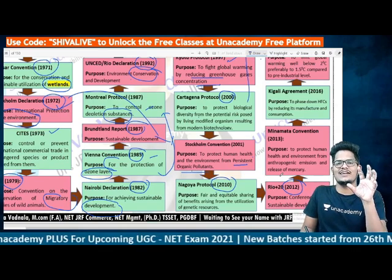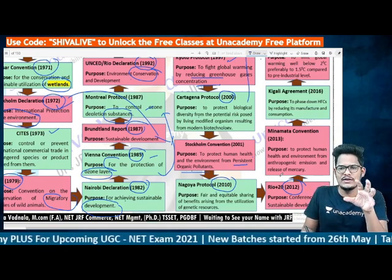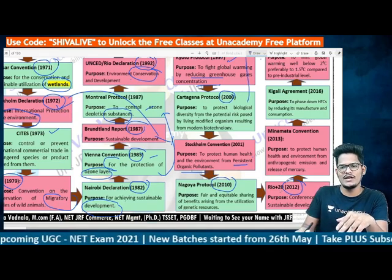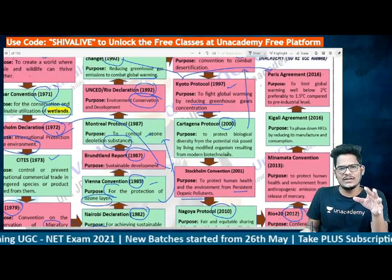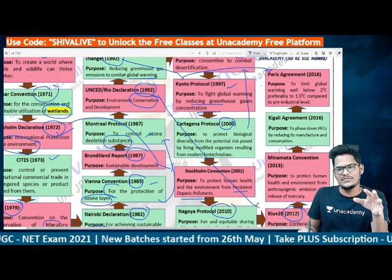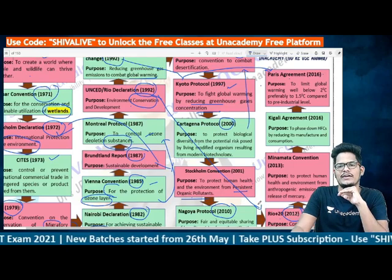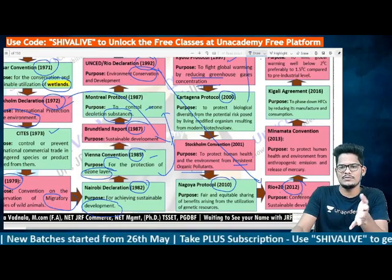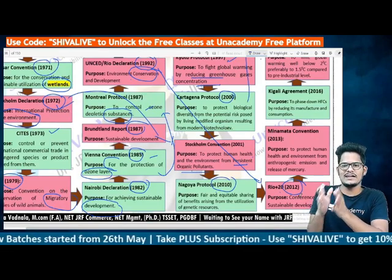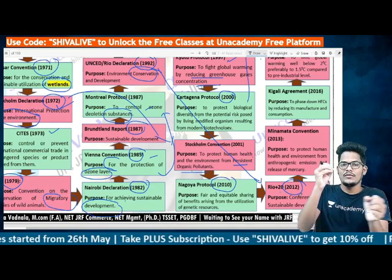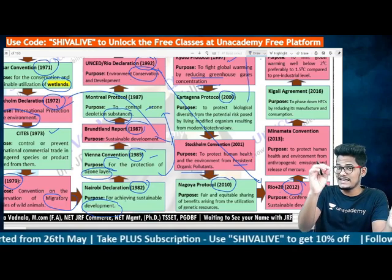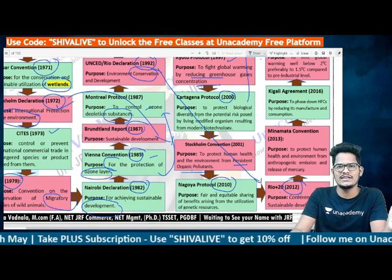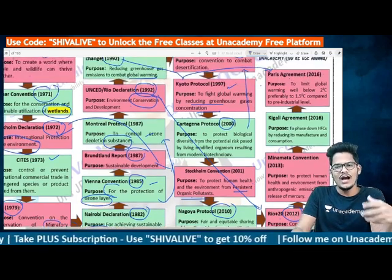Rio+20 was held in 2012, also called the Conference on Sustainable Development. It is called Rio+20 because it occurred exactly 20 years after the original Rio Summit. This summit gave birth to the Sustainable Development Goals (SDGs) that we presently follow, with a target period of 2016 to 2030.